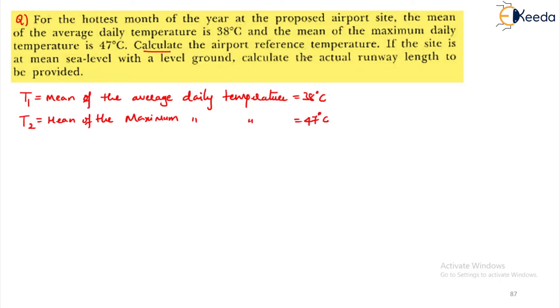They want you to calculate the airport reference temperature. The formula for airport reference temperature is equal to T1 plus T2 minus T1 by 3. T1 is 38 degree centigrade plus T2 is 47 degree centigrade minus 38 degree centigrade whole divided by 3. This will give you a temperature equal to 41 degree centigrade.